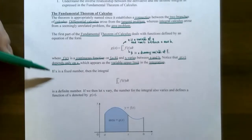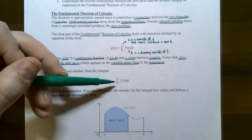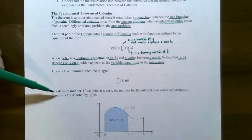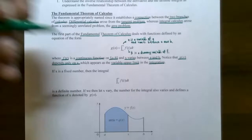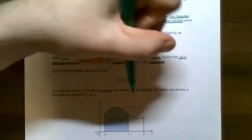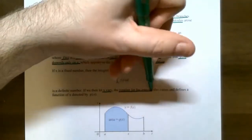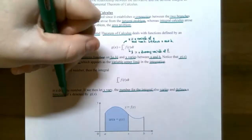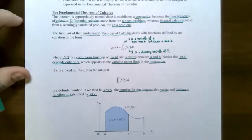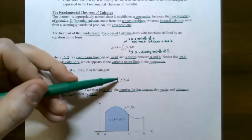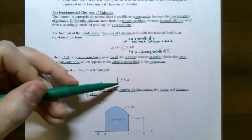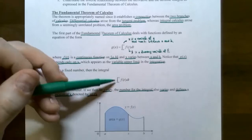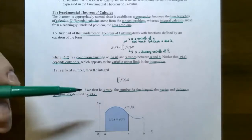If x is a real number, then the definite integral from t equals a to t equals x of f of t dt becomes a definite number. We let x vary so that the value of the integral also varies, giving us a function of x — that's what we call g of x. As x changes between t equals a and t equals b, so will the value of the definite integral.